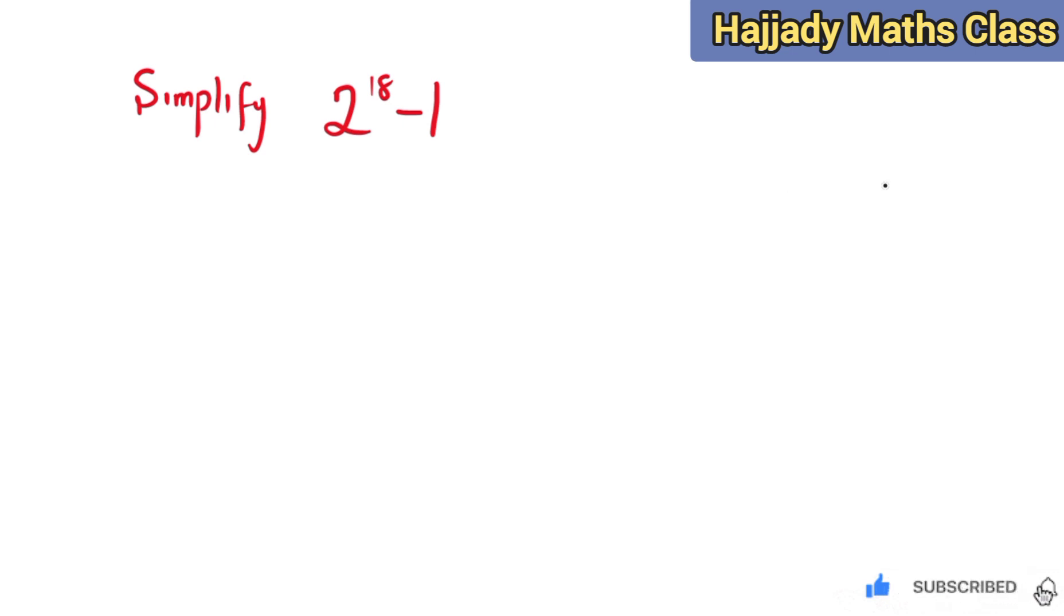So we have 2 raised to the power 18 minus 1. We know that 2 raised to the power 18 can be written in the form of 2 raised to the power 9, raised to the power 2, minus 1.